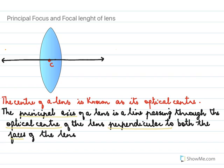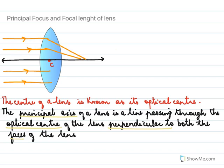Next we will learn what the focus of the lens is. Rays that are parallel to the principal axis, after refraction through the lens, all meet at a point on the principal axis. This point where they meet is called the focus of the lens.